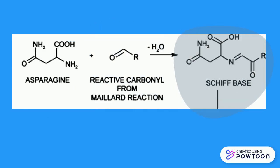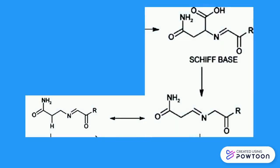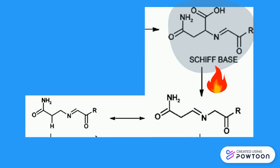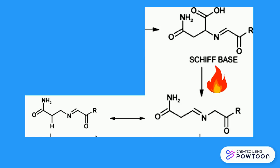This is the first step in the formation of acrylamide. Then, with heat treatment, the Schiff base decarboxylates with the facilitation of the delocalization of negative charges. The decarboxylated Schiff intermediates are formed — this is the second step.